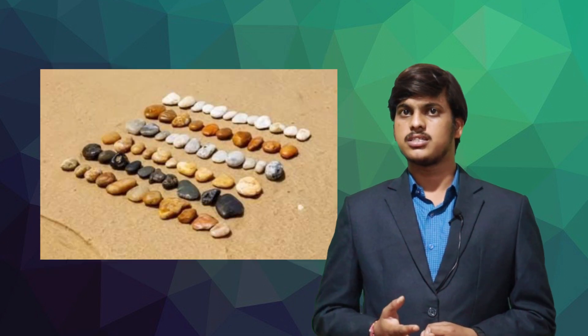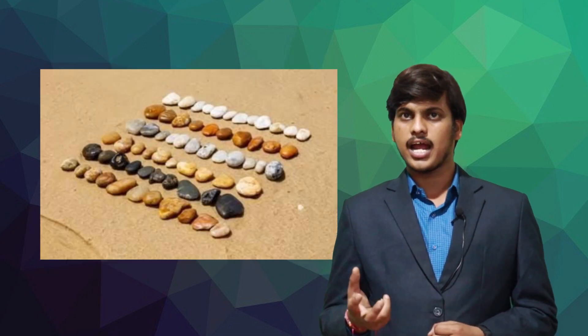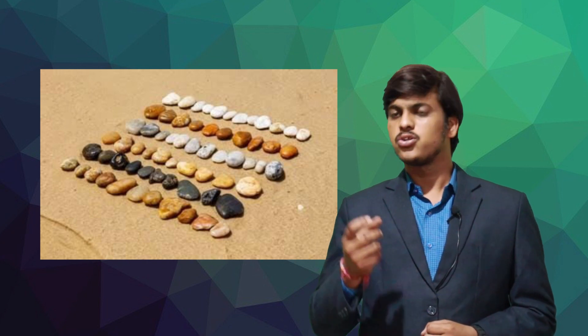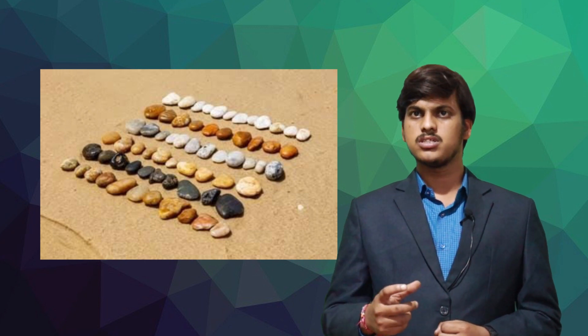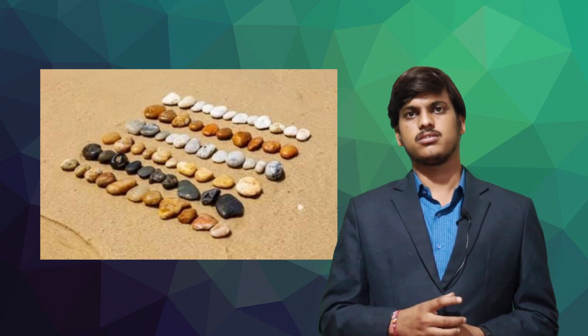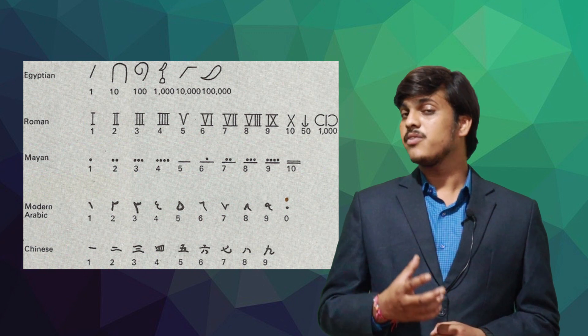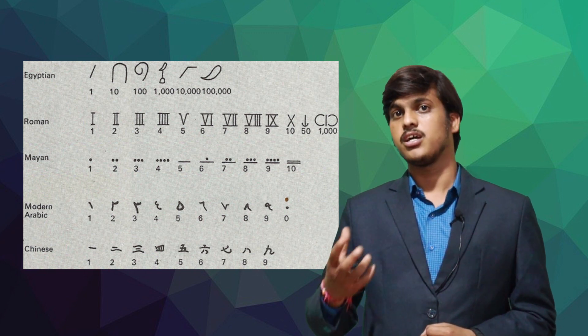People counted with pebbles. They kept a record of what they had by using pebbles to represent each one. They also kept a group of clay stones inside clay pouches. They invent different symbols for different numbers.